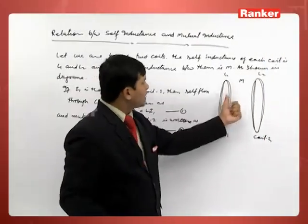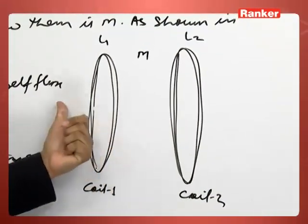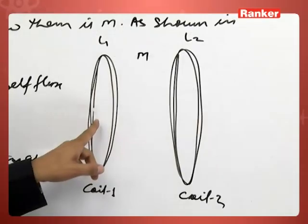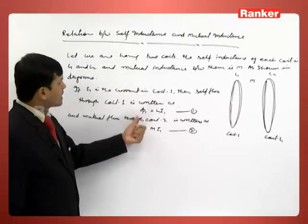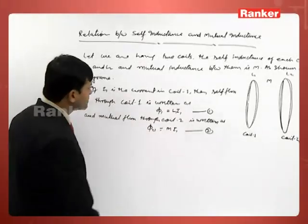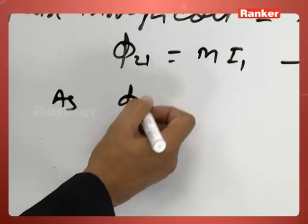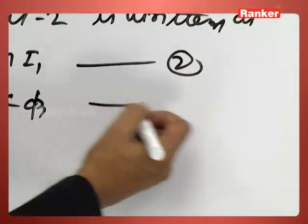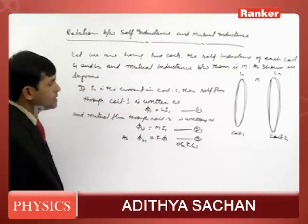All the lines of forces passing from coil 1 need not pass through coil 2. At maximum, the same number of lines can pass through both coils, meaning mutual flux is always less than or equal to self-flux. So we can write φ21 = K·φ1, where K has a maximum value of 1 and a minimum value of 0.